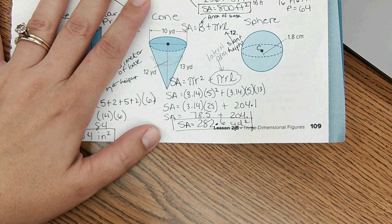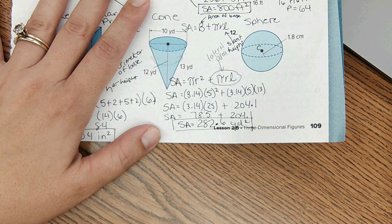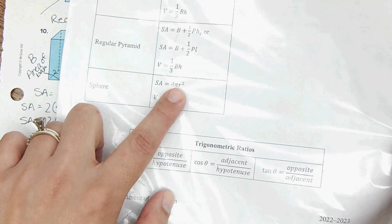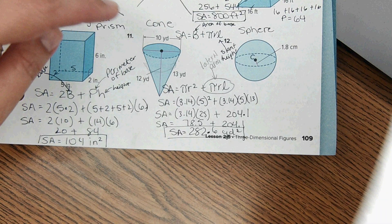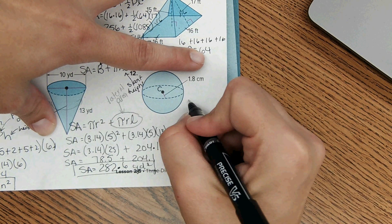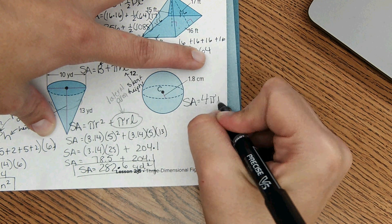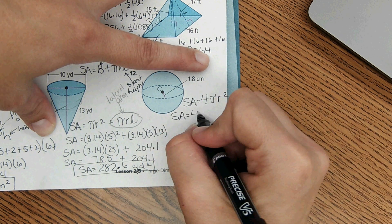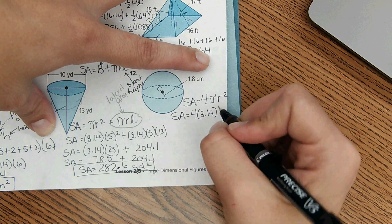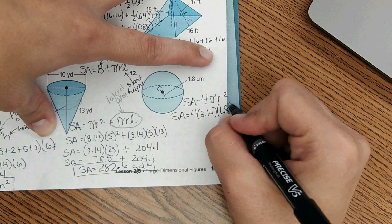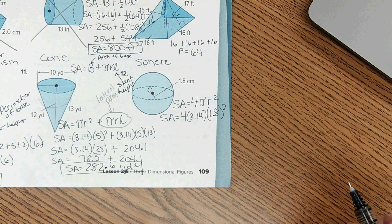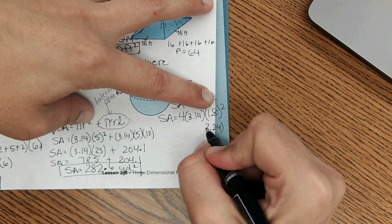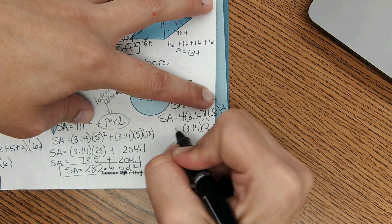The last one, a sphere, is actually the easiest of them all because the equation is very straightforward. For a sphere, surface area equals 4 pi R squared. So we're going to write that down: surface area equals 4 pi R squared. Surface area equals, we'll use 3.14 for pi again, and then radius is 1.8 squared. Okay, 1.8 squared comes out to 3.24, and then you can multiply those three numbers.